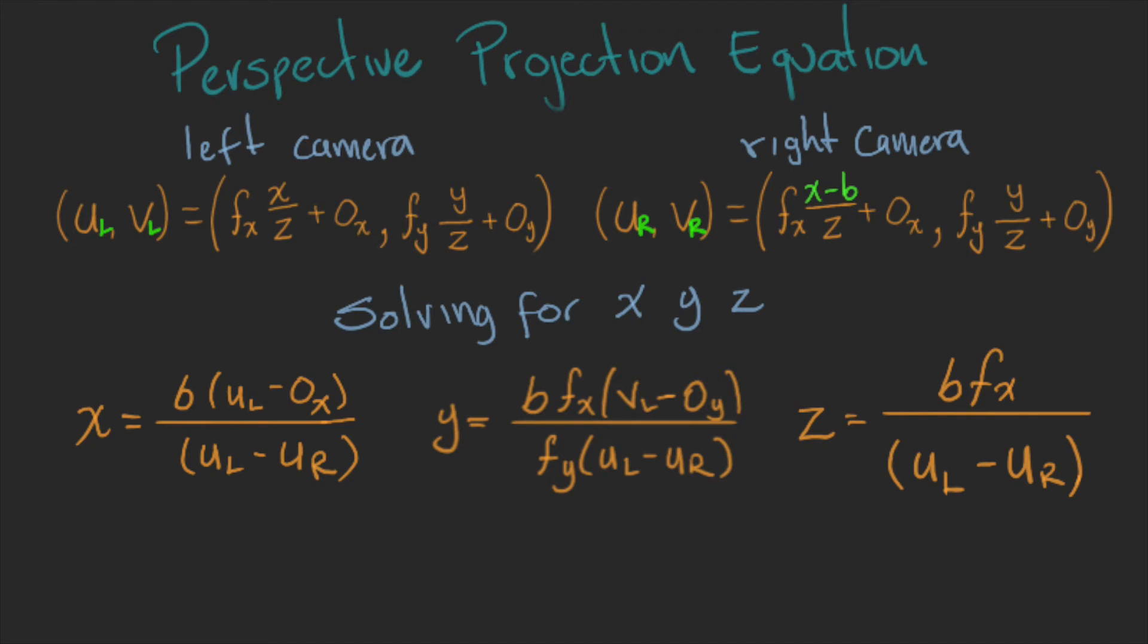The important one here is Z, because that tells us how far the point is from the camera. In this equation, we can see that the distance v has a proportional effect in the result, but also in the denominator. Here we have the difference of the horizontal coordinates of each image. This difference is called disparity, and depends on the distance v.